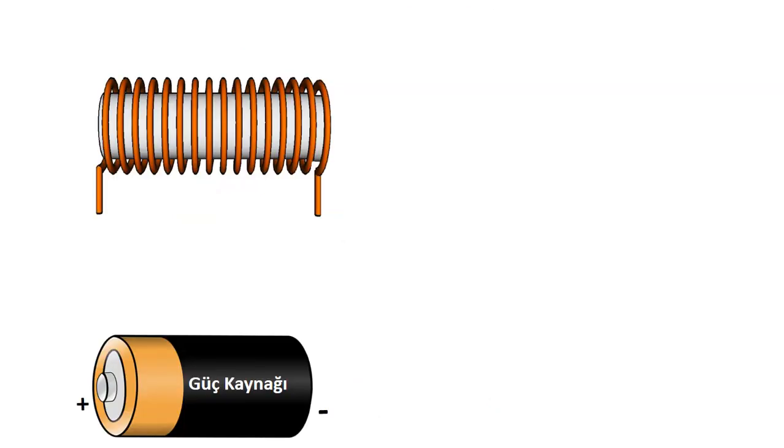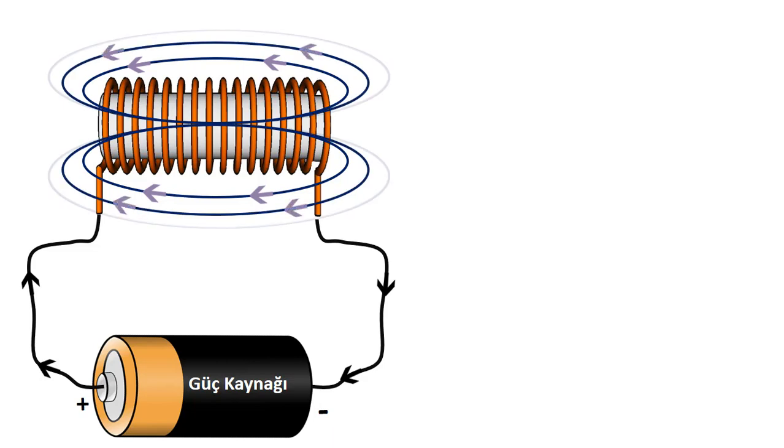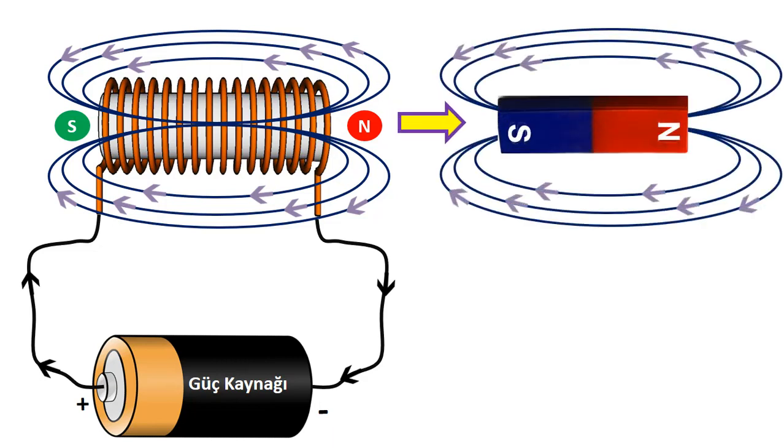As you can see in the figure, when voltage is applied to a coil, a magnetic field is formed around the coil. Now, this coil acts like a permanent magnet with an N and S pole. If the voltage value is increased, the magnitude of the magnetic field also increases. The magnet that consists of this coil is called an electromagnet.